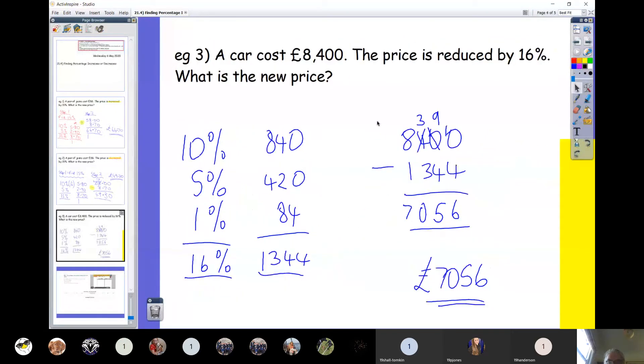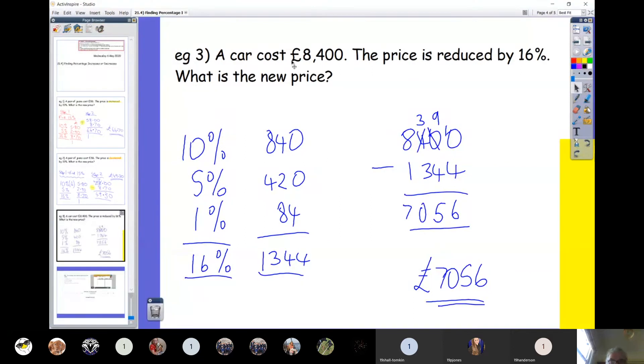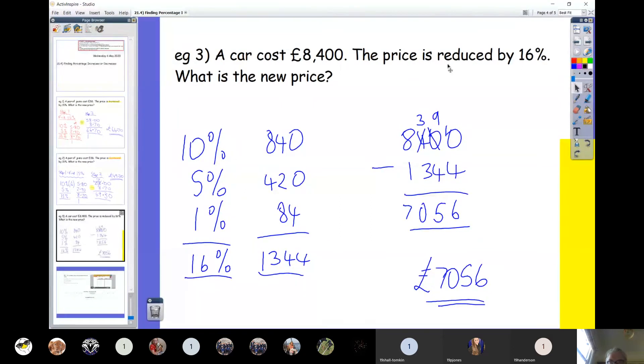One for luck. A car costs £8,400. The price is reduced by 16%. What is the new price? As always, our starting point is to work out 10%. A tenth of £8,400, just dividing it by 10, is £840. Once you've got 10%, then 5% is half the 10%. Half of £840 is £420. And 1% is easiest to go back to the 10% bit. So £840 is 10%, so a tenth of that will be 1%. So £840 divided by 10 is £84.